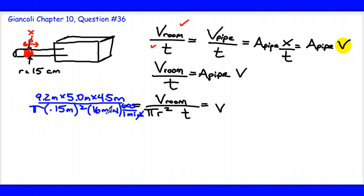I could move that 60 seconds to the numerator here if I wanted to. Either way, I plug that into my calculator and I get the speed is about 3.1 meters per second through the pipe.